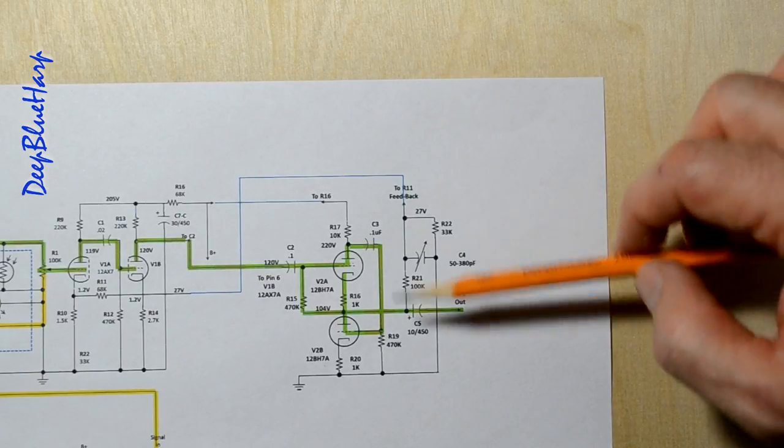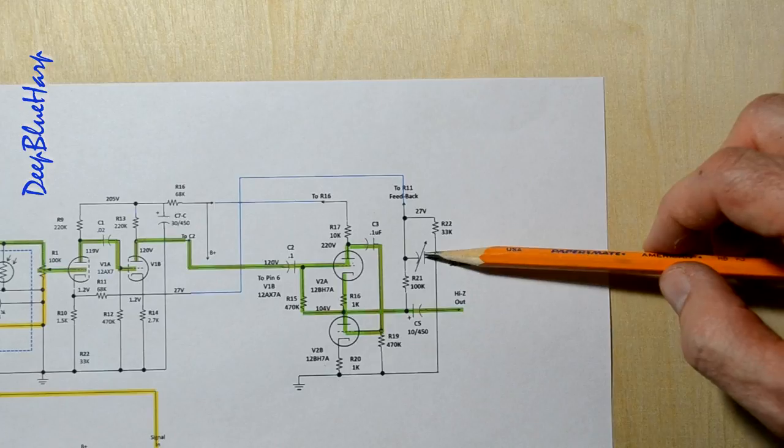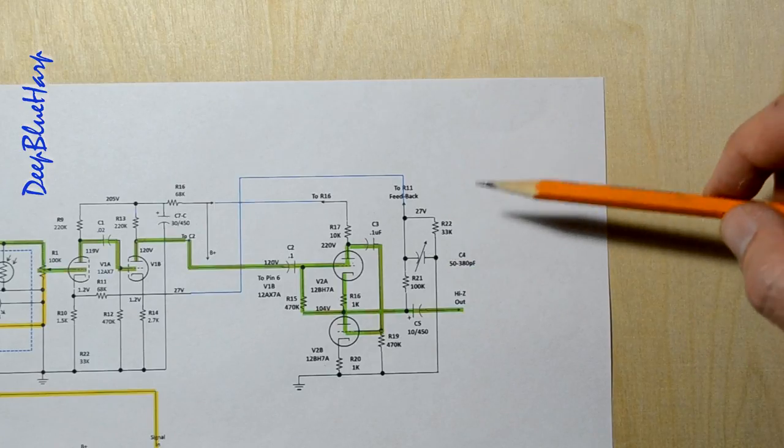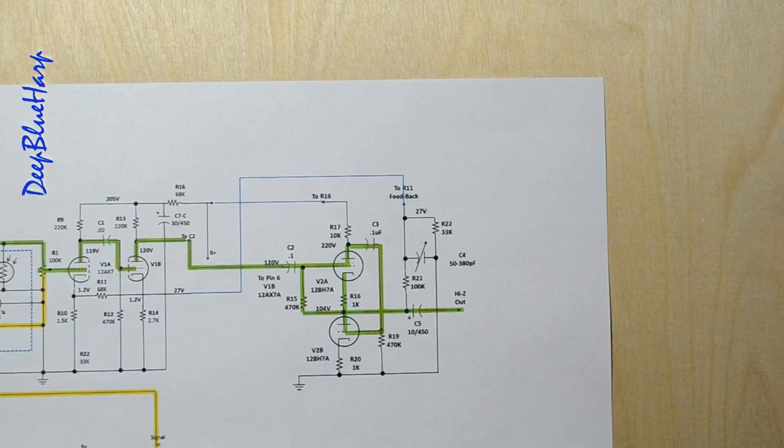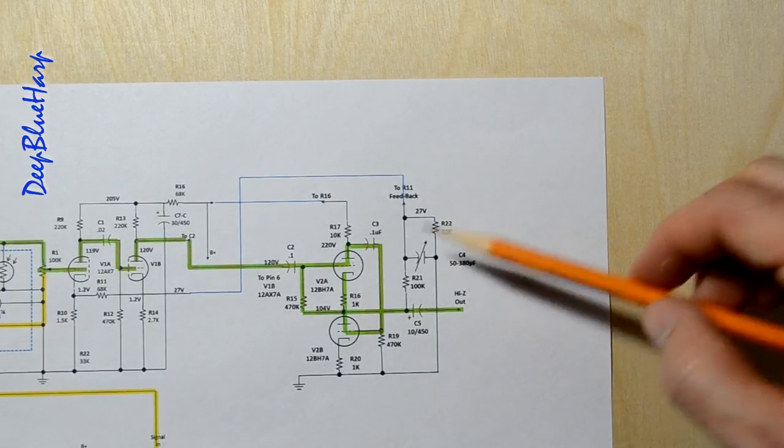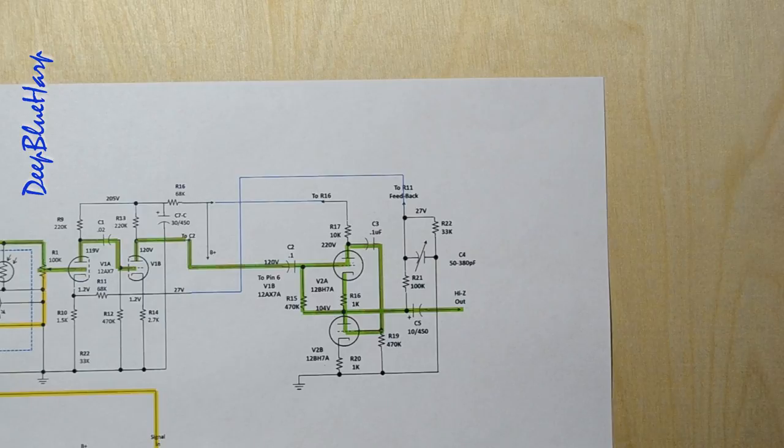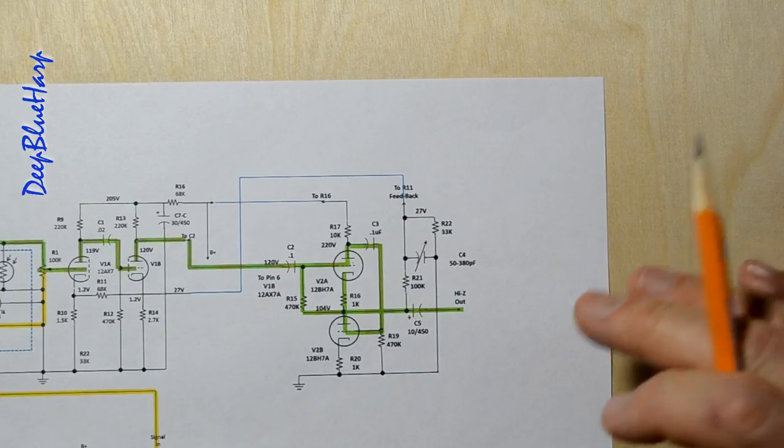This frequency tank, this capacitor, 50 to 380 pF. If you don't want to buy the pot, if you put 150 pF in there, it'll be a little darker tone. And if you go to 300, it brightens up. We're not going to use that piece.